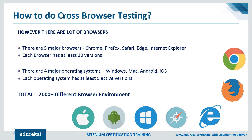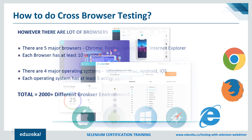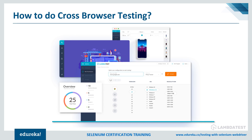The challenge with automated testing is that there are many browsers — Chrome, Firefox, Safari, Internet Explorer, Edge — each with at least 10 versions. For example, Chrome has versions 72, 70, 68, and so on. There are four main operating systems, each with about five versions, such as Windows 98, XP, 7, 8, and 10. In total, there are more than 2,000 browser environments.